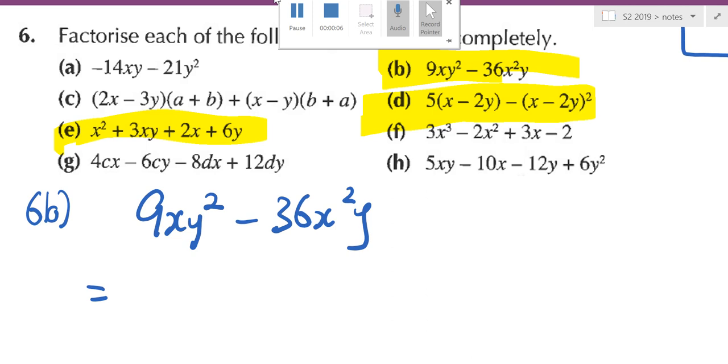Even though there are two terms, you ask yourself, is there a number that is common? 9 is common, right? Because 9 equals 9 times 1, 36 equals 9 times 4. So I can take out 9.